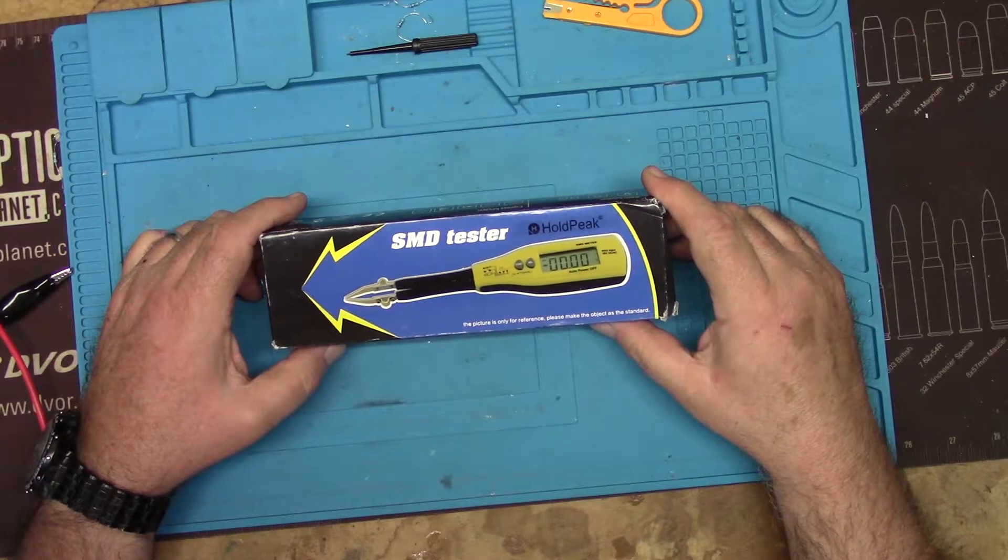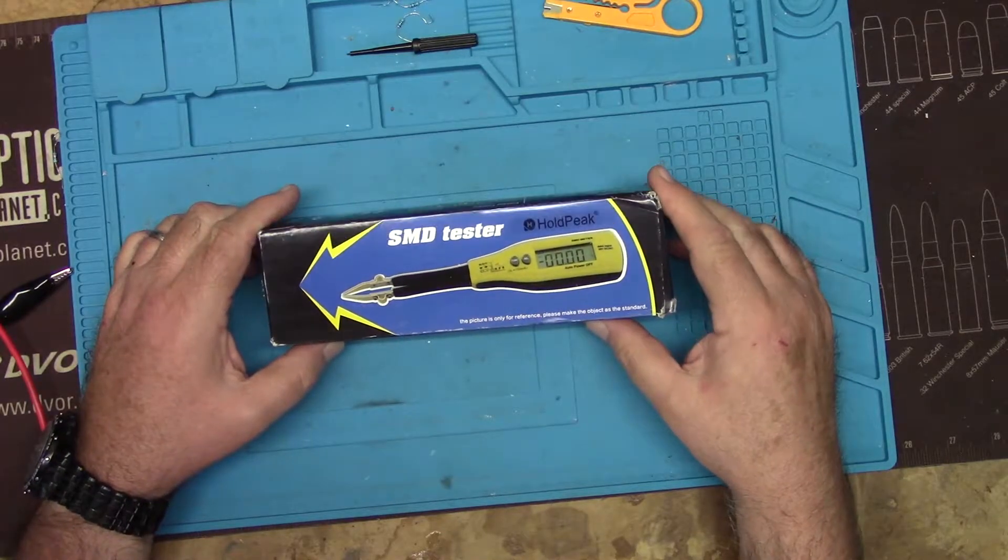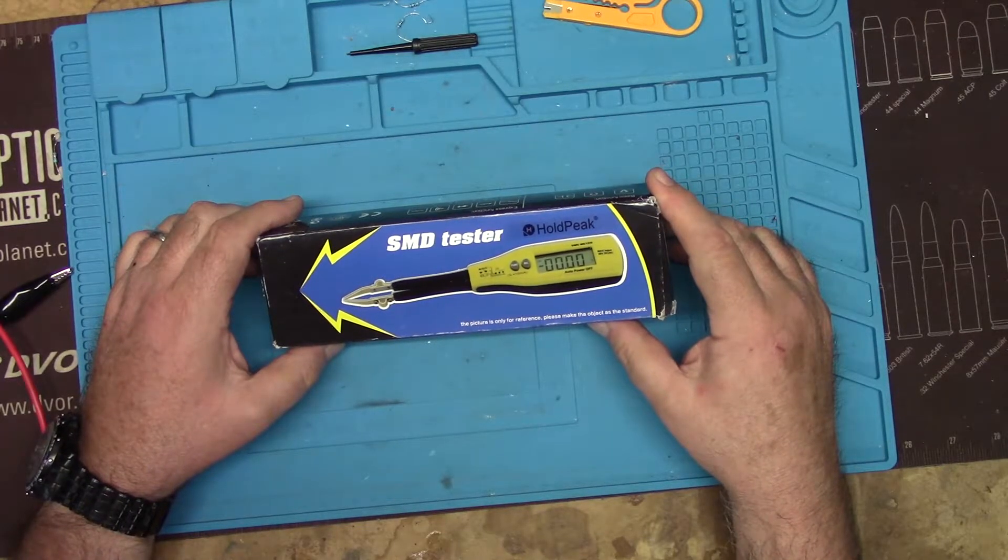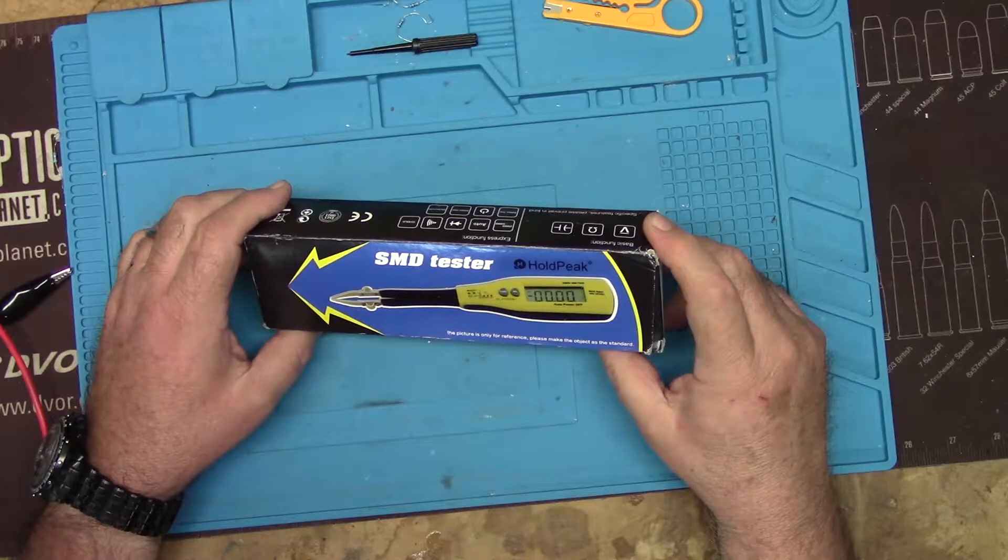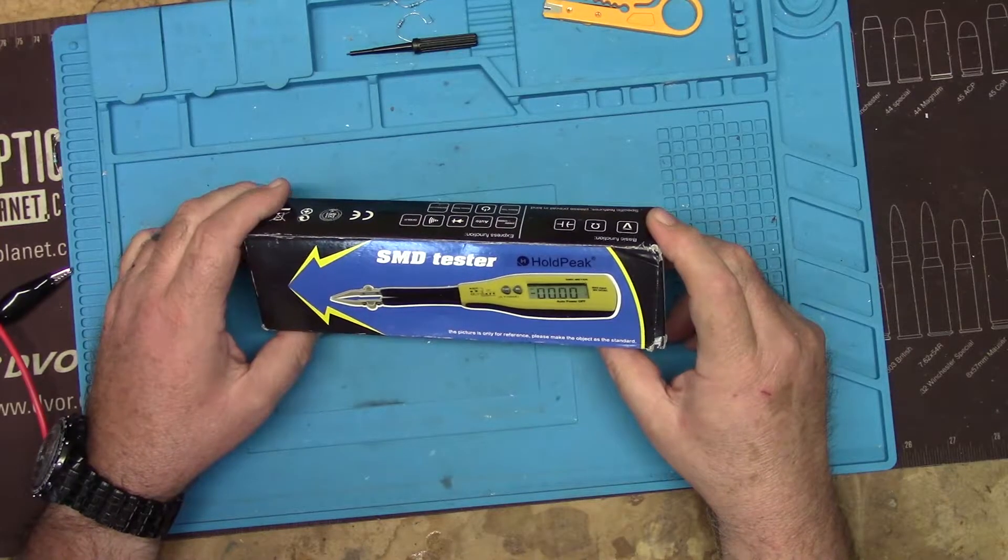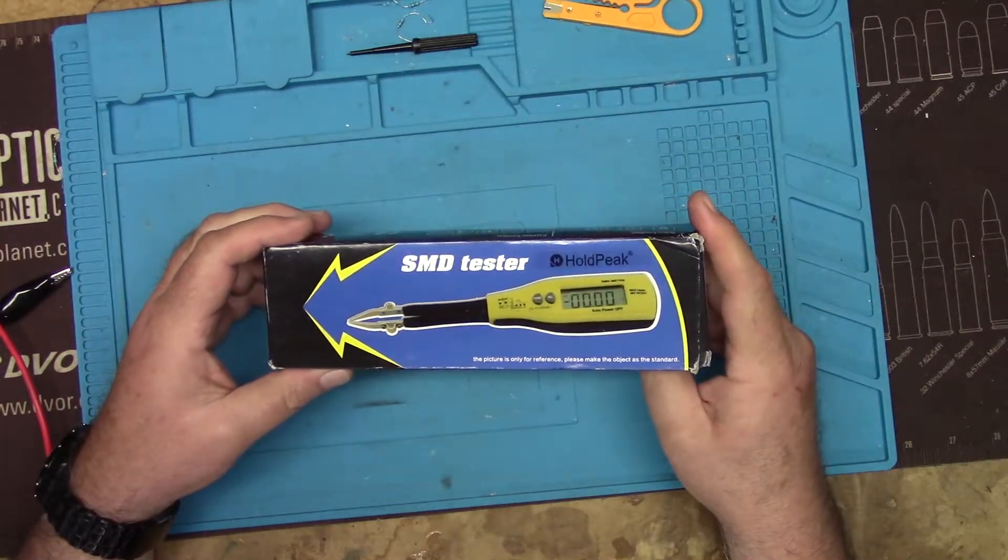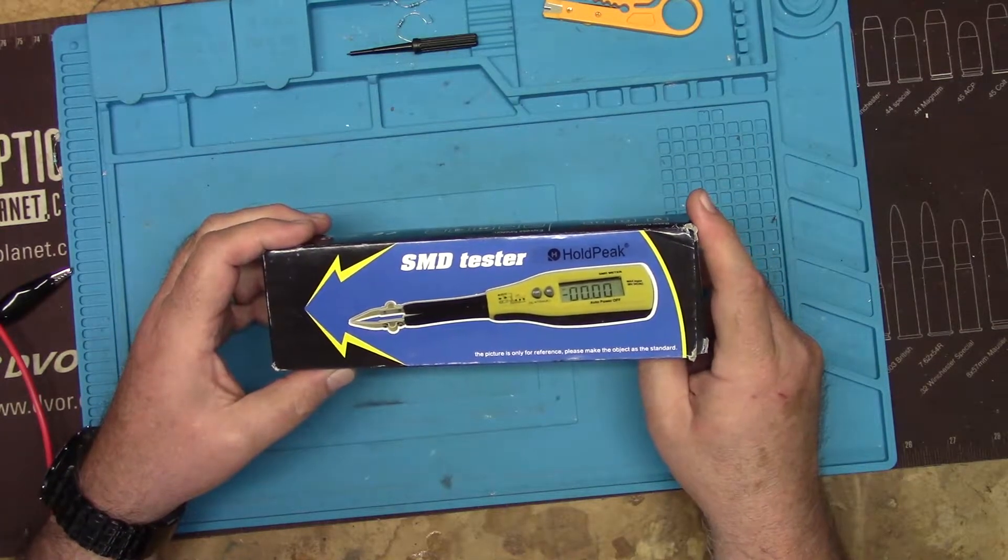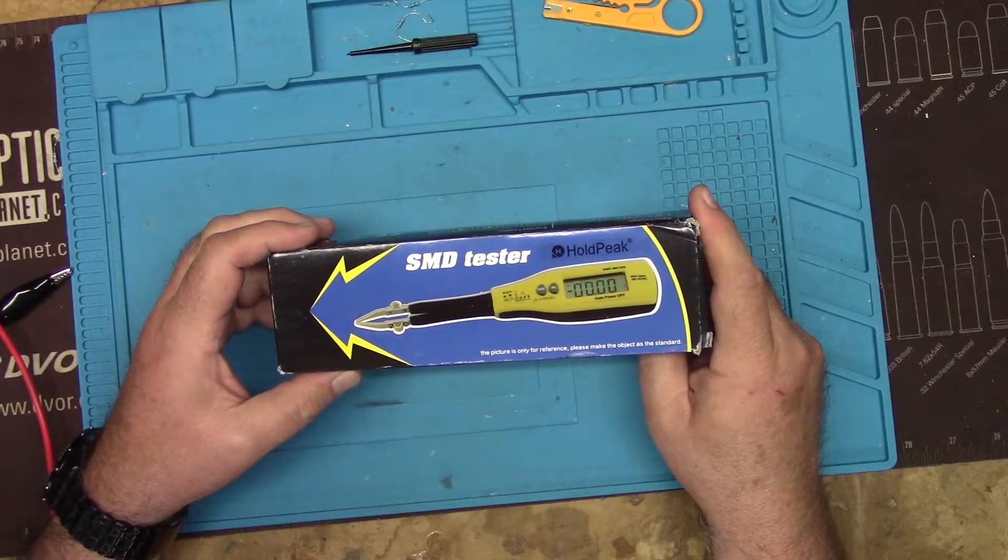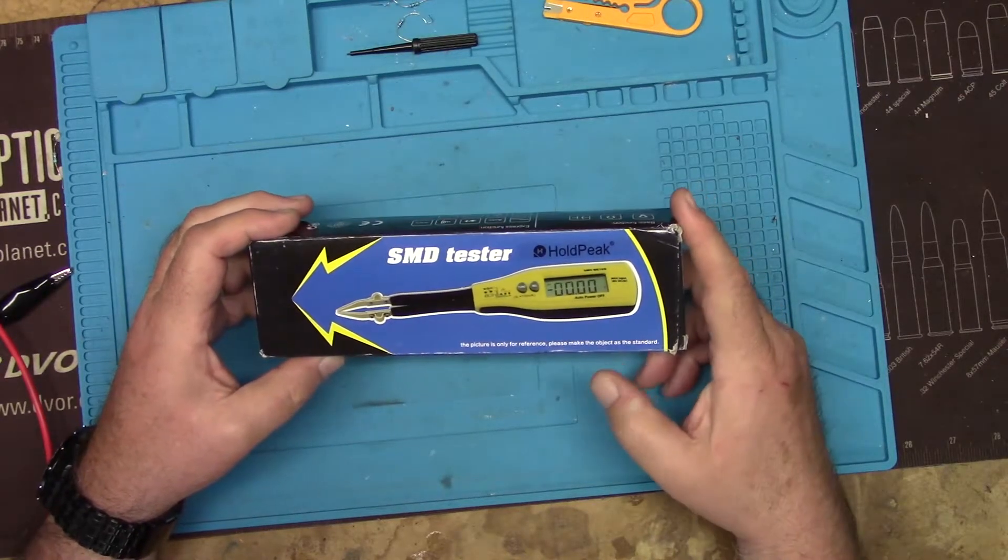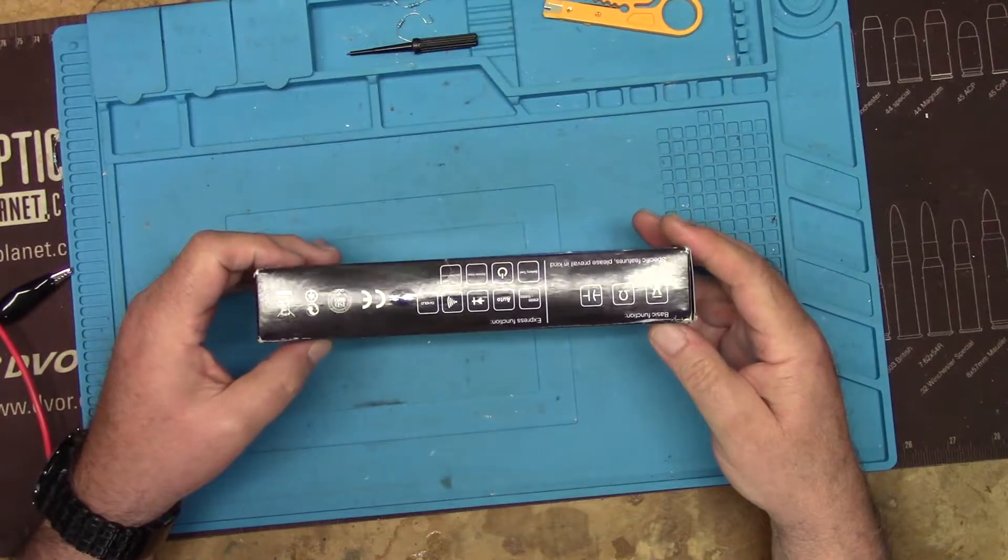In this video I want to do a review of the SMD tester I have here. This is from HoldPeak, model HP-990C. I got this on Amazon for about 20 dollars. This will test capacitance, resistance, it'll do diode tests and it will also test Zener diodes. It's made for surface mount devices, SMDs.